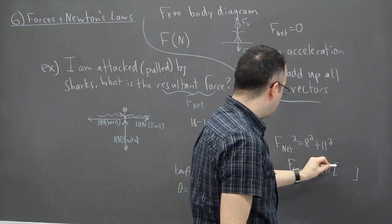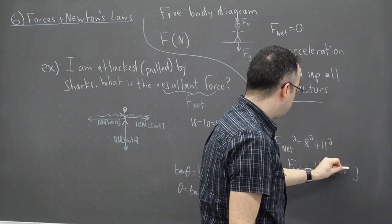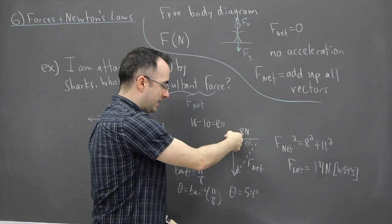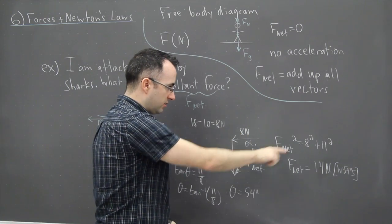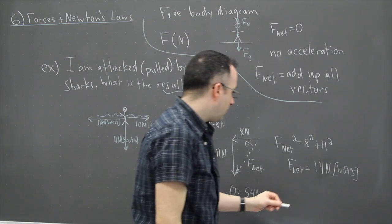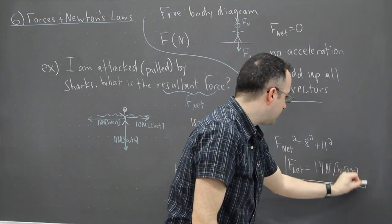So then I can say it's west 54 degrees south. Because I go west first, then 54 degrees south. So that could be my answer. Or I could also try to figure out the bearing. So this right here, by the way, could be my answer.